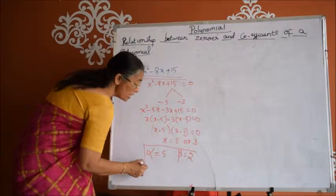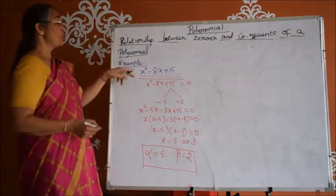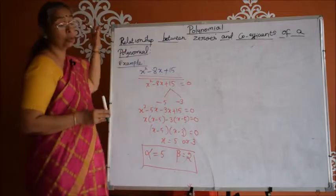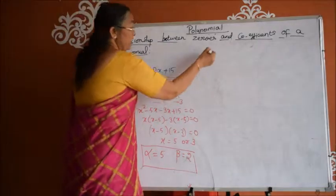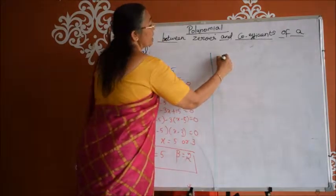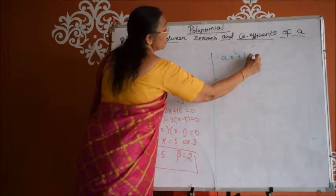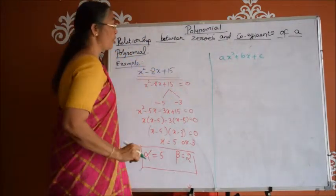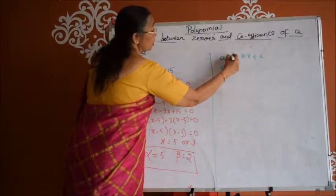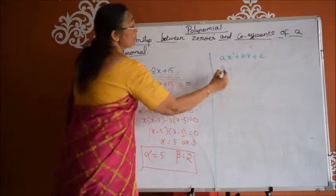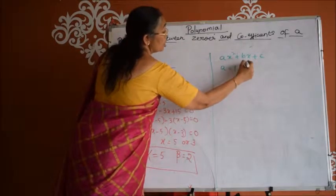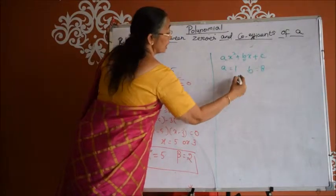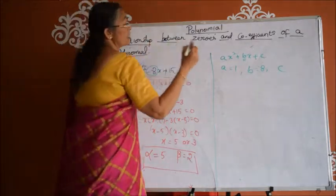I am considering alpha and beta as the two zeros of this polynomial x squared minus 8x plus 15, which are nothing but 5 and 3. The general form of a quadratic polynomial is ax squared plus bx plus c. Comparing, we get: a is the coefficient of x squared which is 1, b is the coefficient of x which is minus 8, and c is the constant term which is 15.